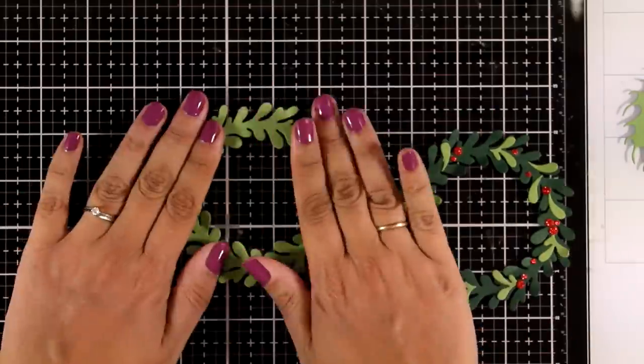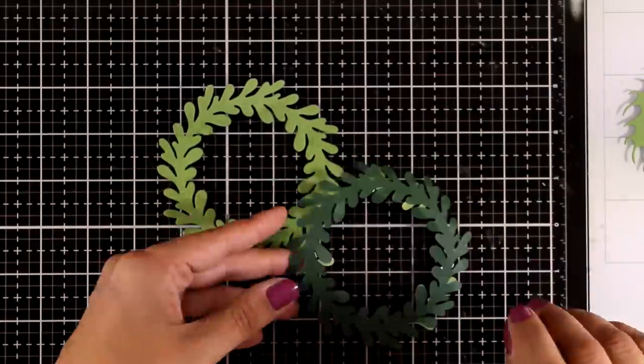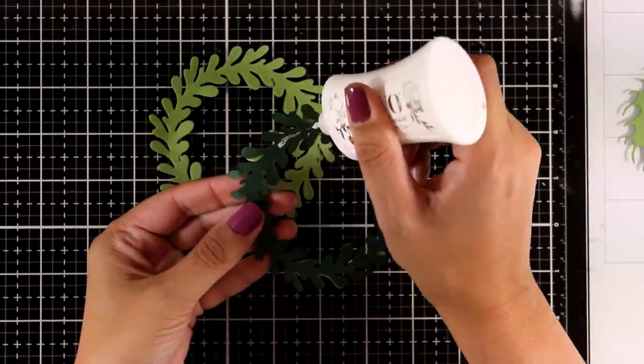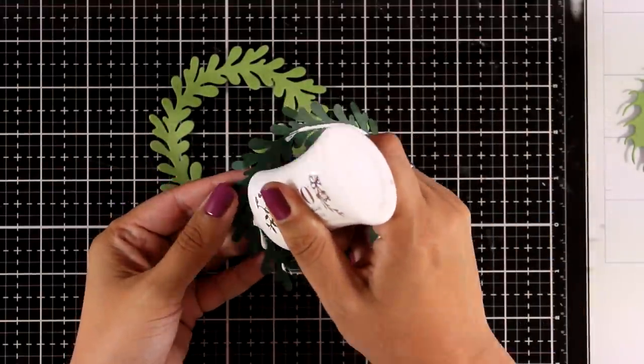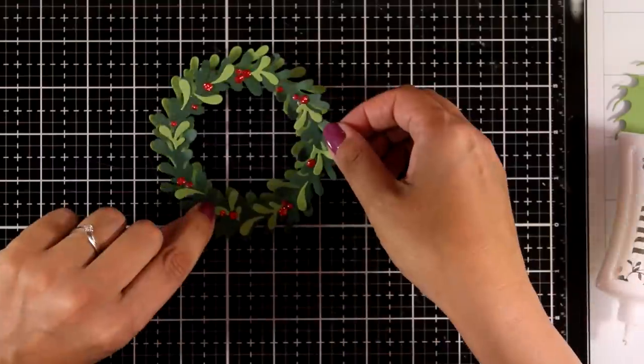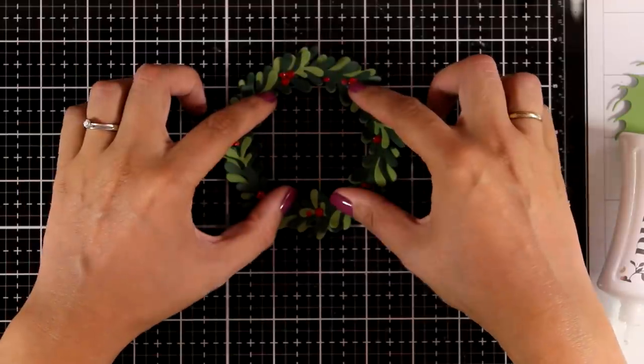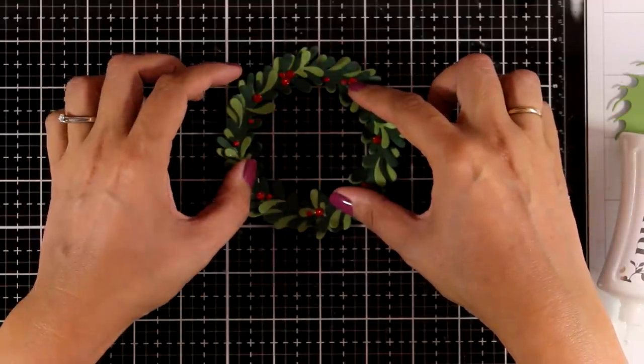Remember this can be a wreath for any season depending on what you choose to stick on top of those leaves. For example you can go with flowers or acorns for fall. You can even use tiny little pumpkins if you have such stamps and cutouts to make a wreath for Halloween. So many different ways that you can dress it up.